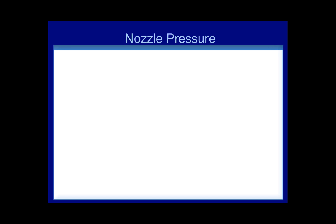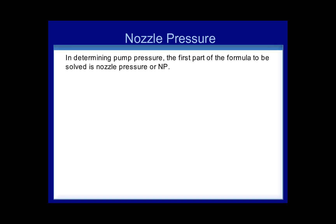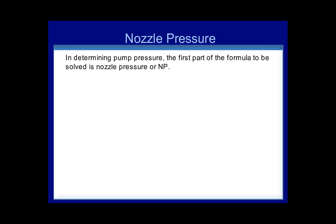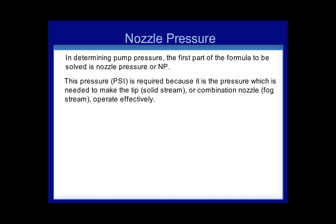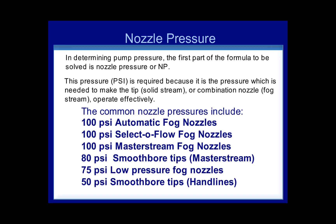Nozzle pressure. In determining pump pressure, the first part of the formula to be solved is nozzle pressure, or NP. This pressure, or PSI, is required because it is the pressure needed to make the tip of a solid stream or combination nozzle fog stream operate effectively. Common nozzle pressures include 100 PSI for automatic fog nozzles, 100 PSI for a selectoflow fog nozzle, 100 PSI for master stream fog nozzles, 80 PSI for smoothbore tips for a master stream, 75 PSI for low-pressure fog nozzles, and 50 PSI for smoothbore tips on handlines.